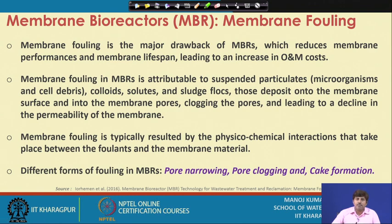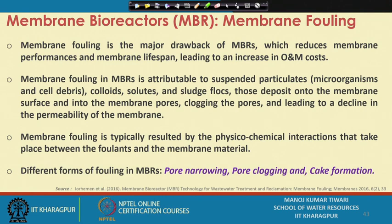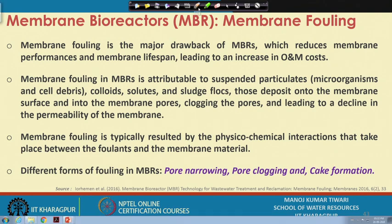One major problem of membrane systems is fouling of the membrane. Since we are filtering large particles like biomass, there is a high possibility of fouling, which is one of the major drawbacks of membrane systems. Membrane fouling reduces membrane performance and membrane lifespan, requiring fouling control measures or membrane replacement, which increases the operation and maintenance cost of the system.